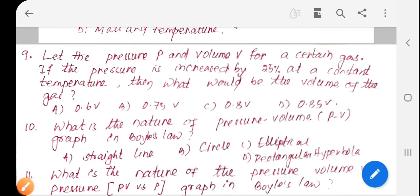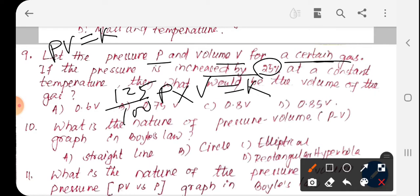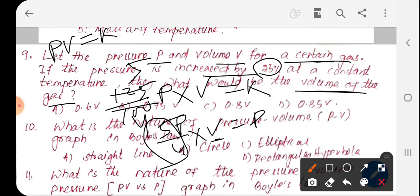For a certain gas, if the pressure increases by 25%, and you know that P into V is constant, then pressure increases 25%, which is 1.25 times. Since P into V is constant, the new pressure is 5P/4 into V equals constant. This gives 0.8, option C.